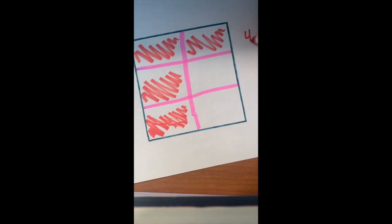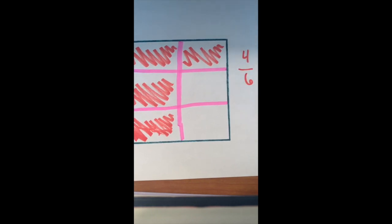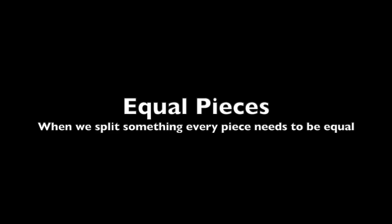We would write it as four over six, and you'd say that as four sixths. You do that because you have four of the pieces colored in out of the six pieces.